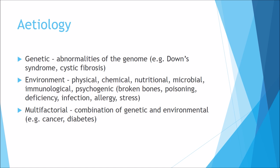Diseases can have a massive variety of causes, but we can separate these into three categories: genetic, environmental, and multifactorial. Genetic abnormalities are from the genome — examples include Down syndrome, where you've got an extra chromosome, and cystic fibrosis, where you've got a mutation.